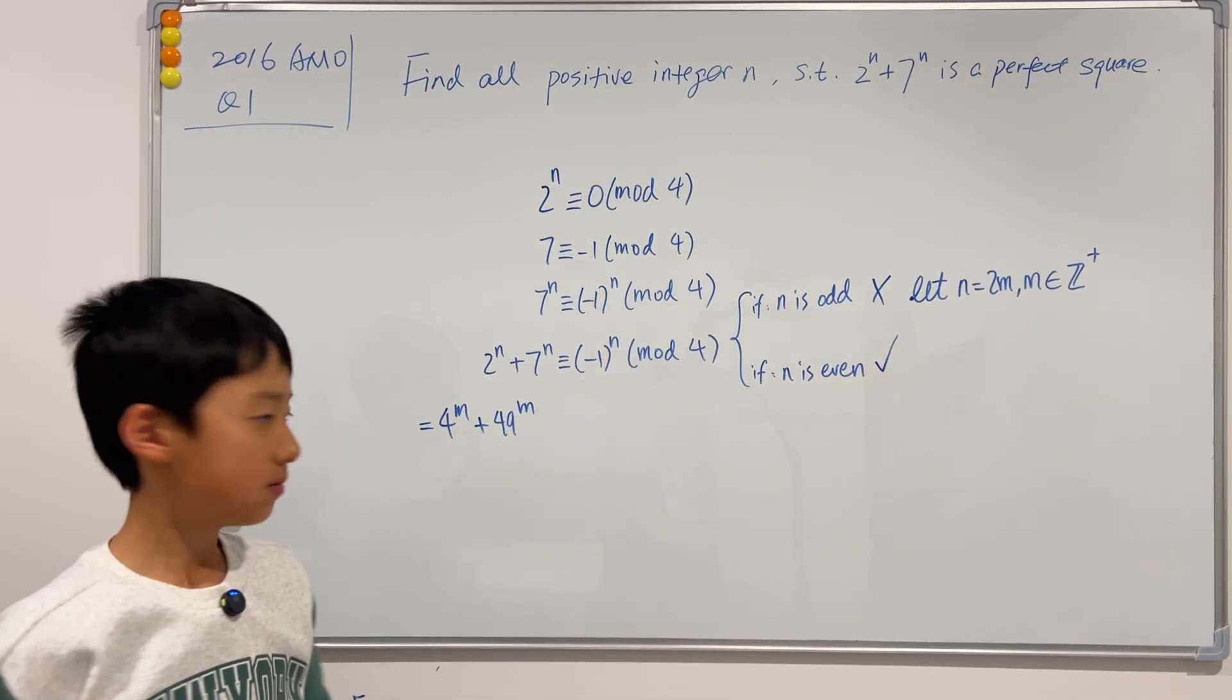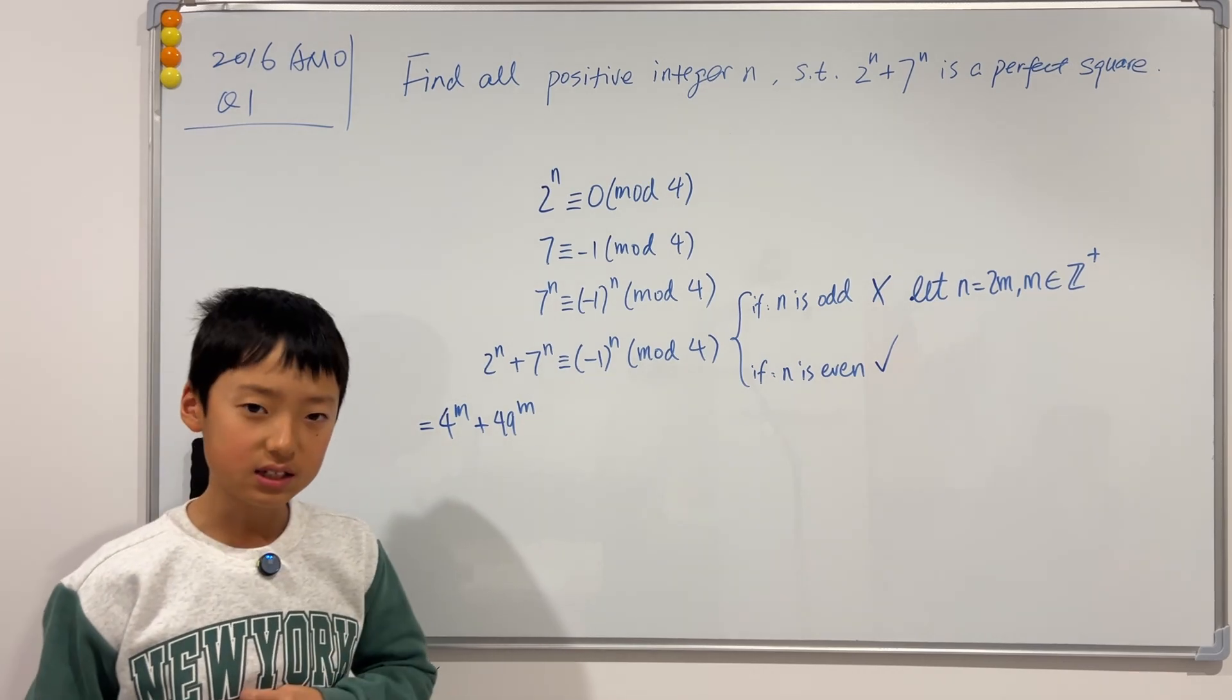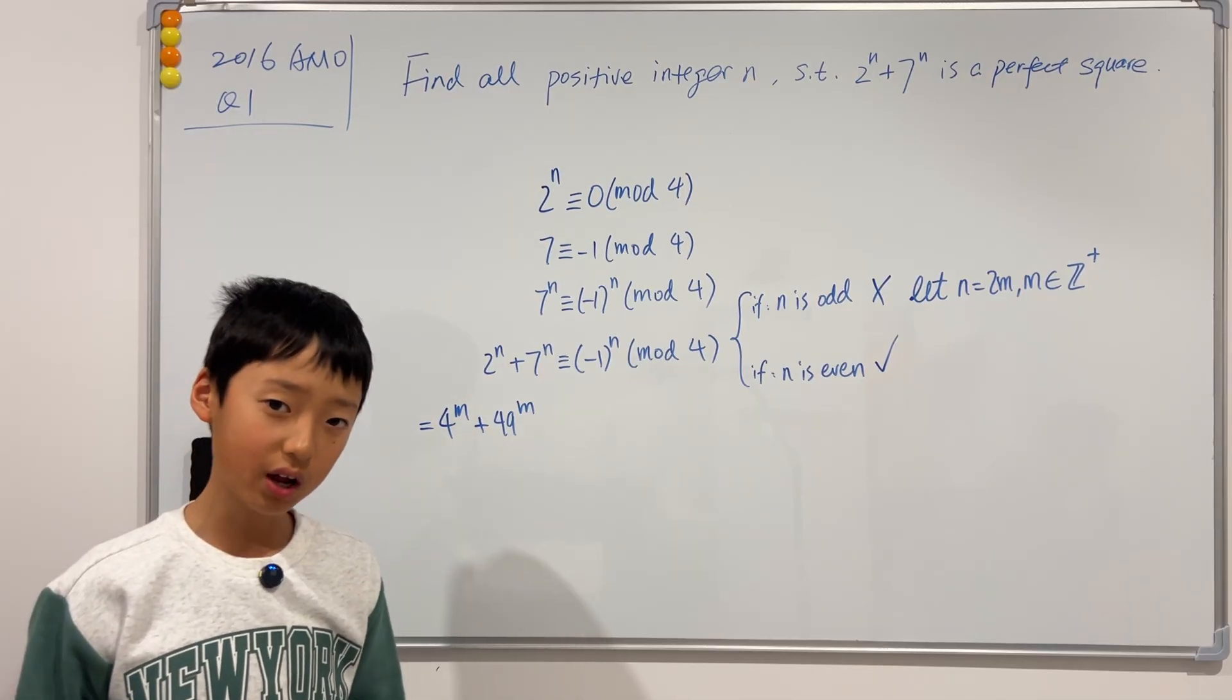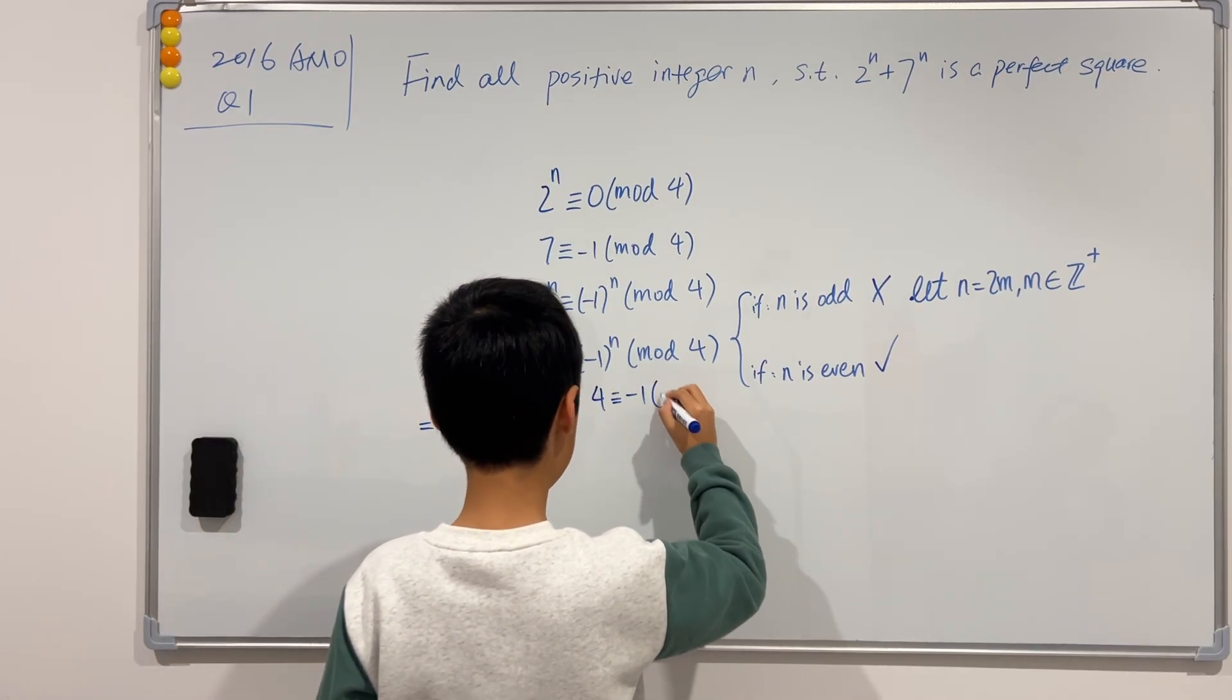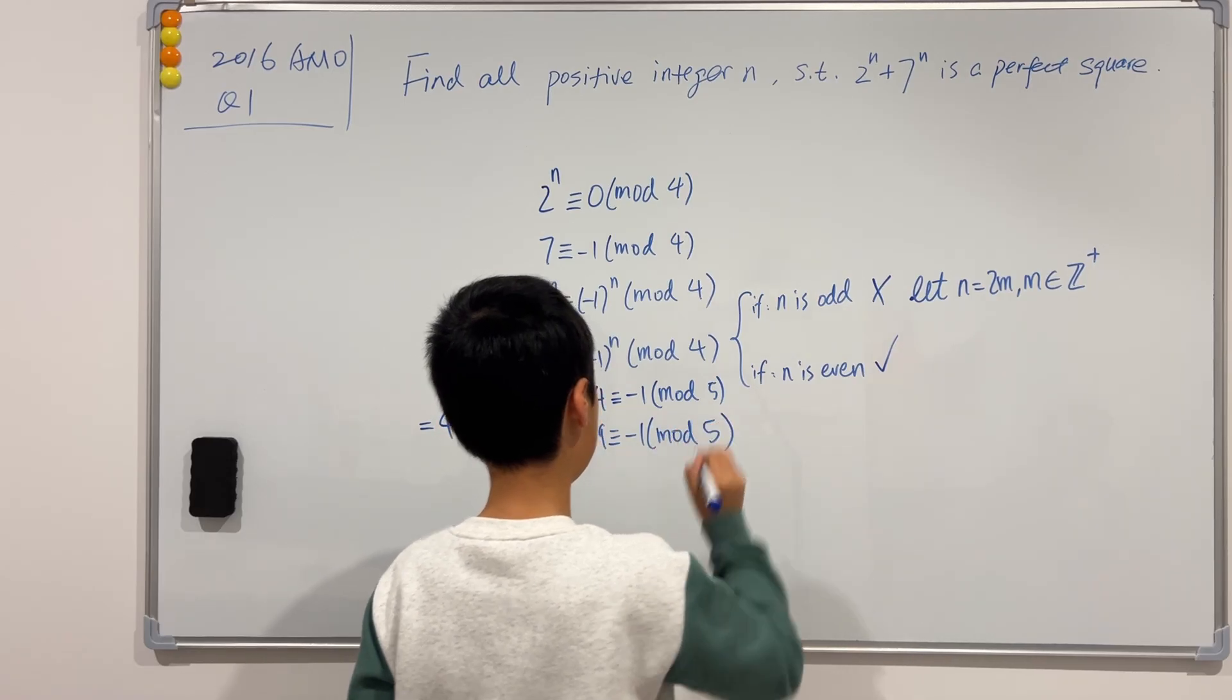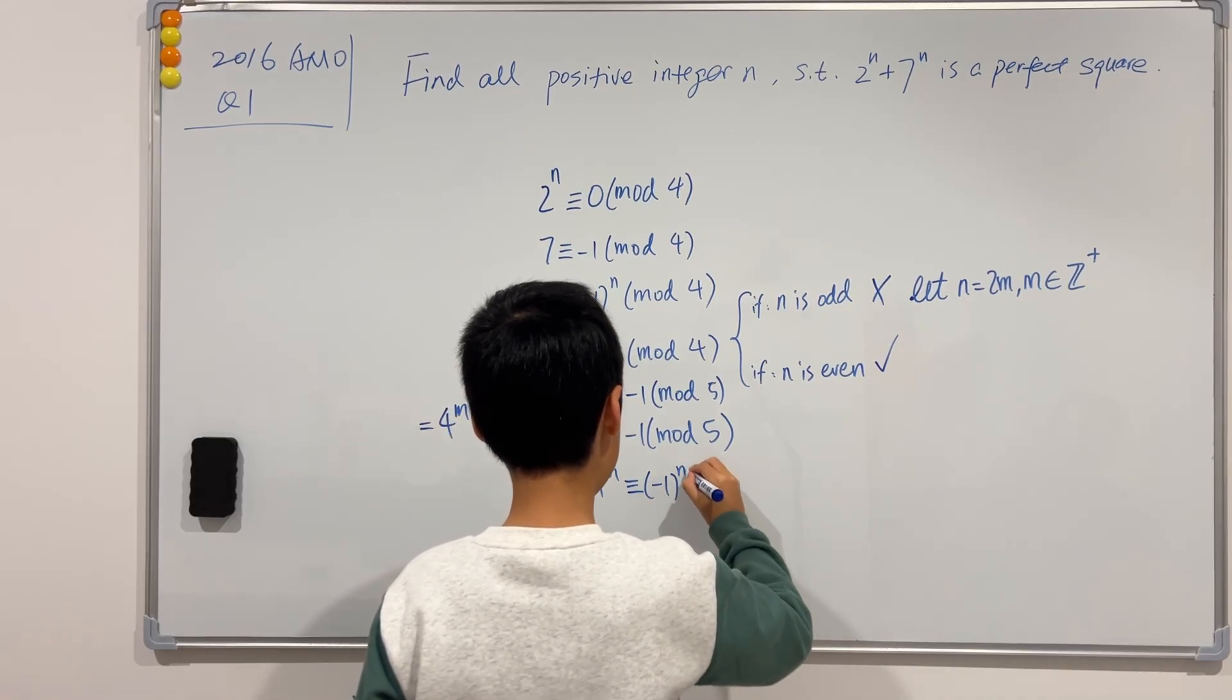Now, in here, using mod 4 will be useless. So what mod should we use? Well, when I see this, I think of using mod 5. Because we see that 4 is congruent to negative 1, and 49 is also congruent to negative 1. So if we use mod 5, then we can see that 4 is congruent to negative 1 mod 5. And 49 is also congruent to negative 1 mod 5. So if we raise both of these to the power of m, then we can see that 4 to the m is congruent to negative 1 to the m mod 5.